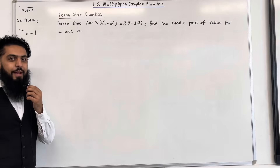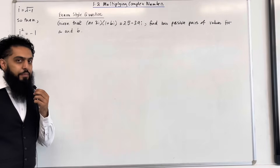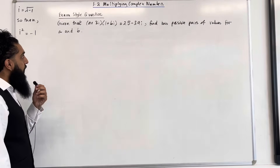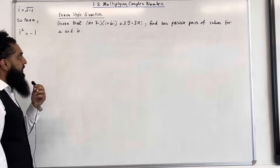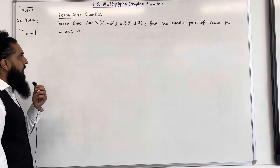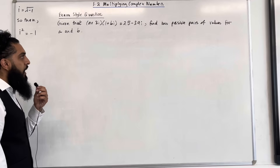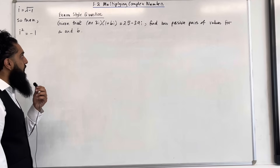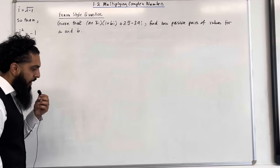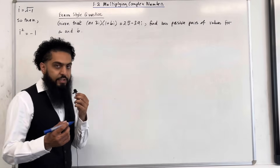Here is the first exam style question. Given that (a + 3i) multiplied by (1 + bi) is equal to 25 minus 39i, find two possible pairs of values for a and b. Let's have a look at the solution.